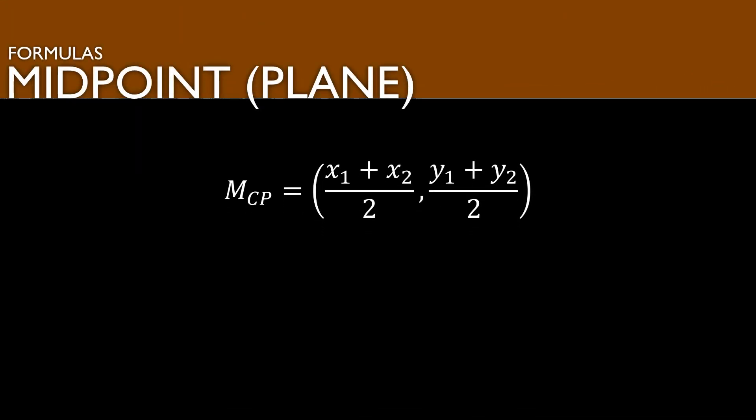The next formula is the midpoint on a coordinate plane. You'll be given two ordered pairs, assigned as x1 and y1, and x2 and y2. Plug those values into the midpoint formula: the quantity x1 plus x2 over 2, comma y1 plus y2 over 2. This gives you a third ordered pair which is your midpoint on the coordinate plane.